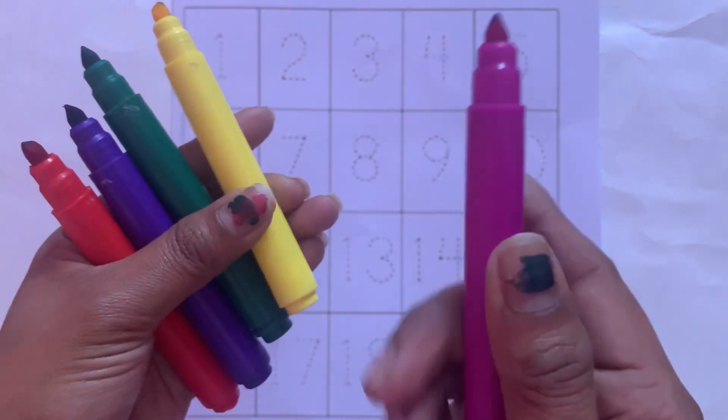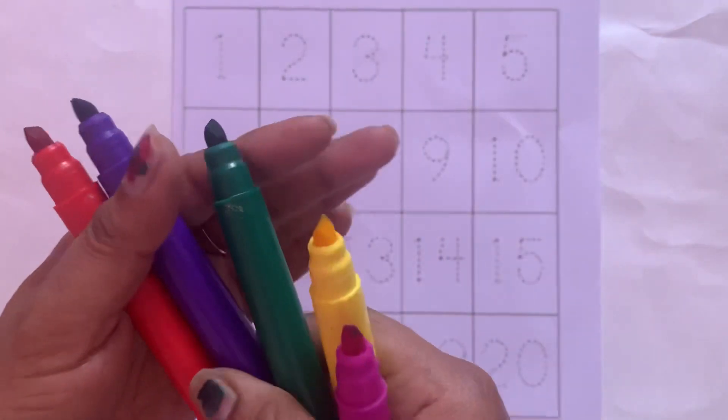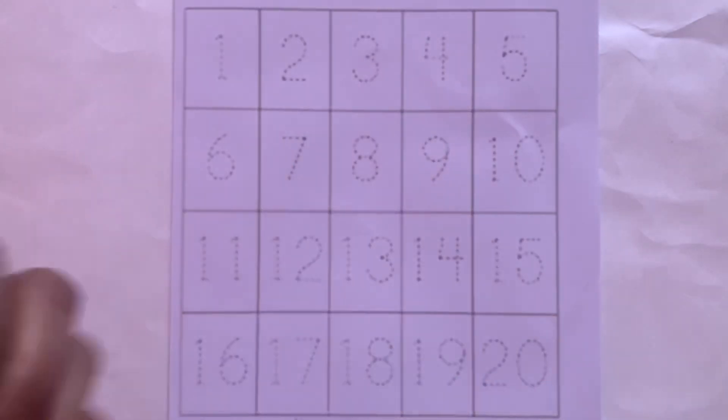Pink color, yellow color, green color, purple color, and red color. Today we learn 1 to 20 counting. Let's start.